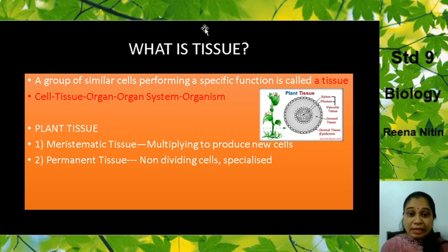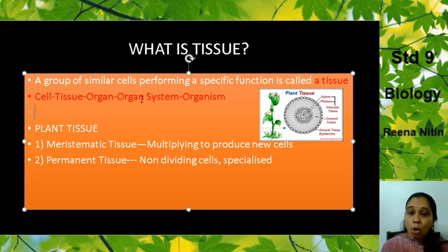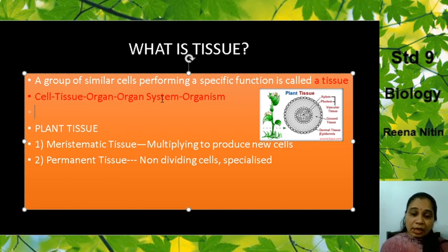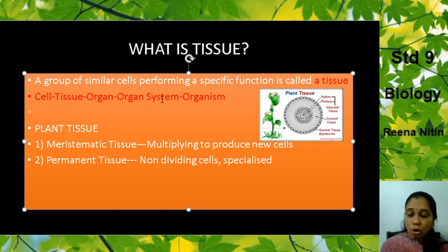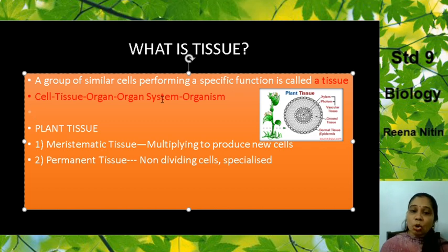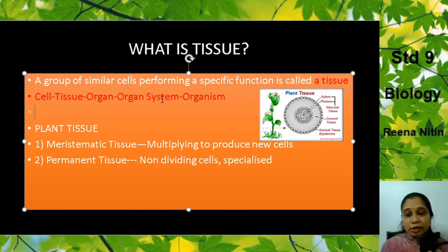The small intestine, the lungs — they are organs. Now these organs come together and they form the organ system. For example, the stomach is an organ, the small intestine is an organ, the large intestine is an organ, the esophagus is an organ, your mouth is an organ. All these organs come together and they form an organ system — which in this case we call the digestive system.